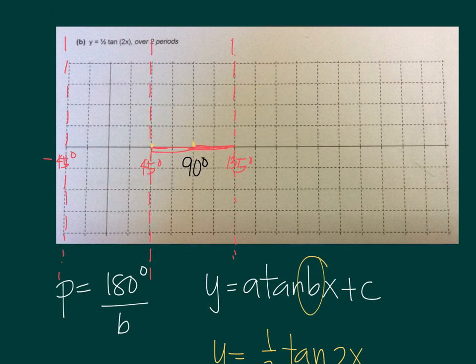So in doing that, we will be able to create two periods for the function one-half tangent 2x. So let's just erase part of the graph. So we have negative 45, we can include zero as well, this is zero, and then 90, and then 135. So this is what you need to do.